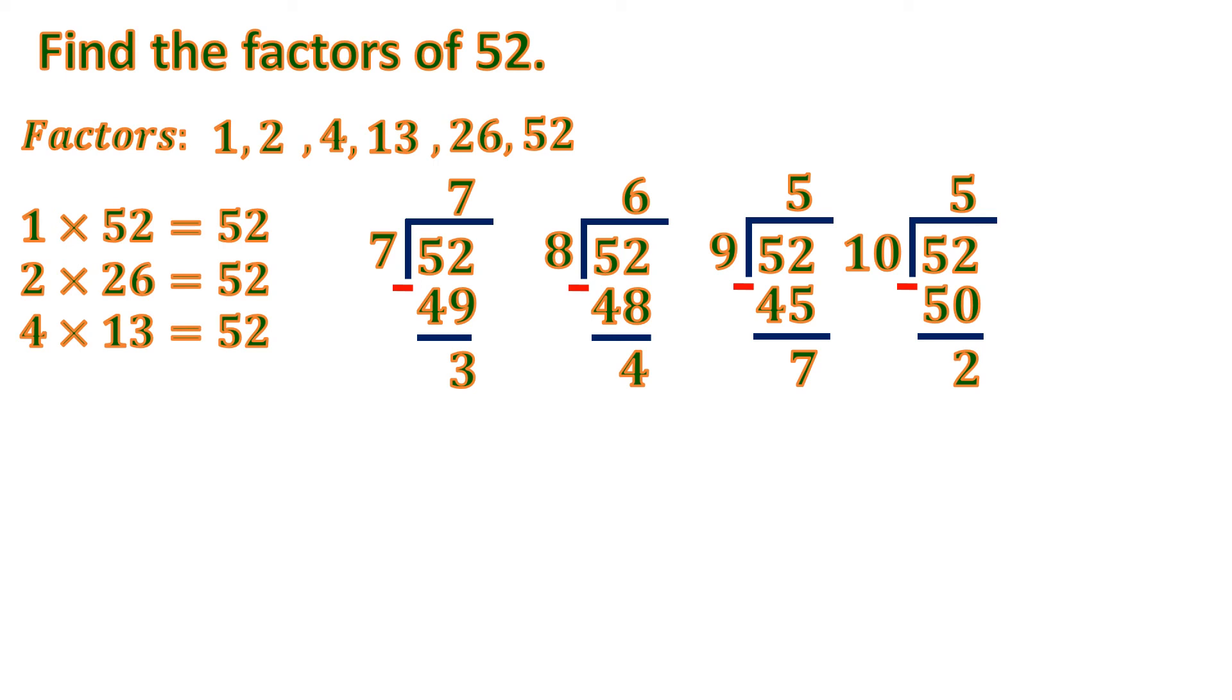So let's continue. We have 52 divided by 11. So it will be 4 times 11, because 5 times 11 is 55. That's more than 52. So we'll have 4. So 4 times 11 is 44. Then subtract. We will get 8. So remainder 8 means 11 is not a factor of 52.